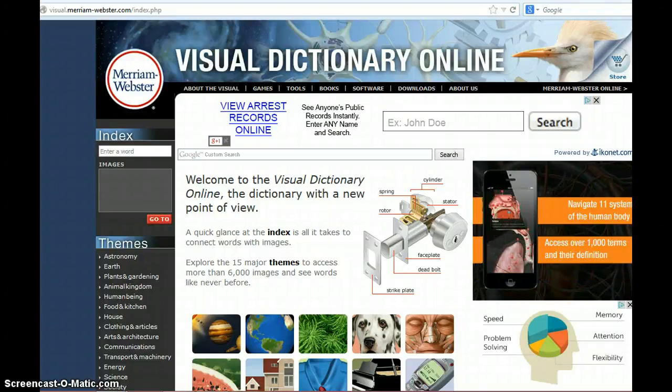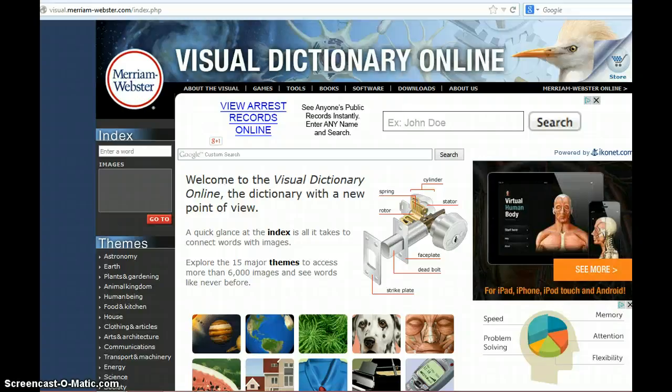This is a short tutorial on how to use Merriam-Webster Visual Dictionary Online. Where you're going to search is right here underneath index. This is where you're going to enter your vocabulary word.